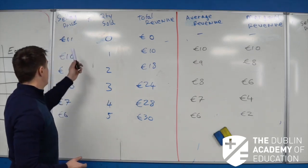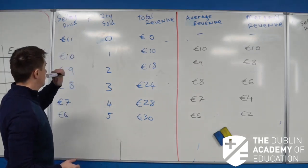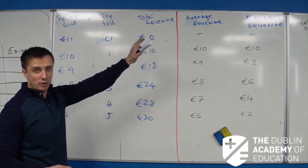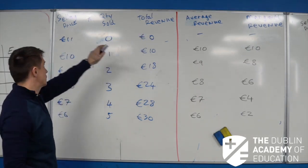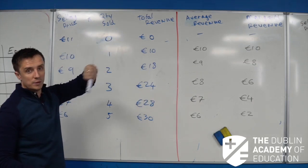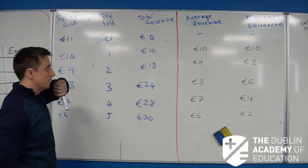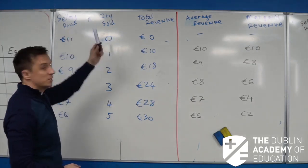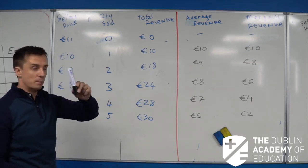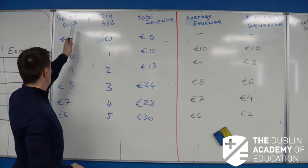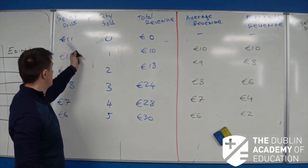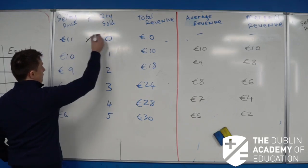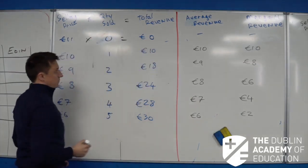The first thing to look out for is: what's our total revenue? The definition for total revenue is your selling price multiplied by quantity sold. For example, if I'm selling these markers at 11 euro, nobody's going to buy them — it's too expensive. So my selling price will be 11, nobody buys them, so I'm not going to have any revenue.